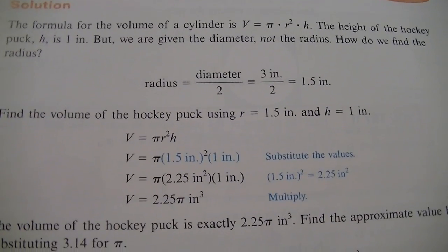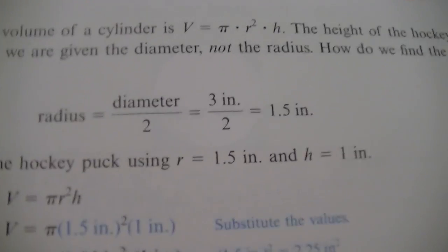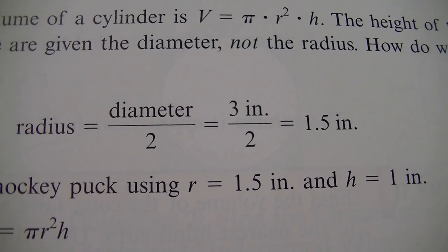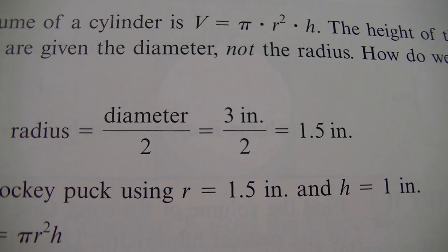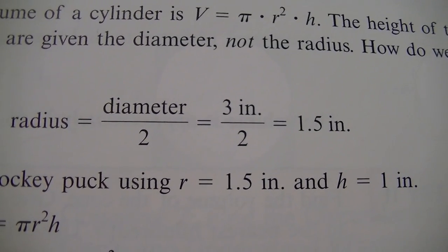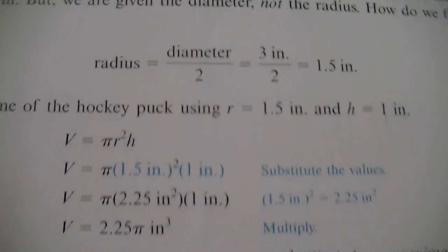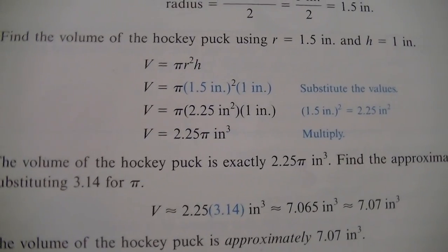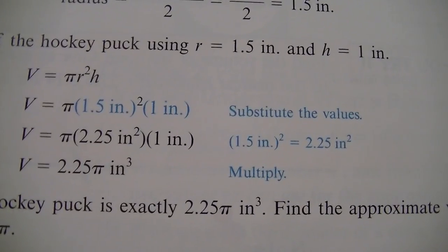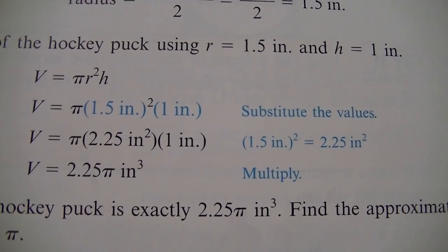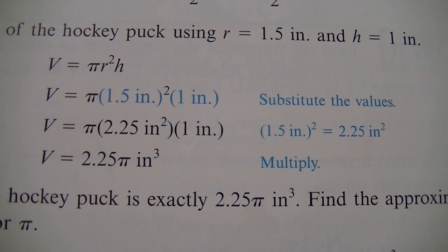All right. So they show us what I was just talking about. Radius, we had to take that diameter, cut it in half. So the three divided by two. And if you put that in your calculator, three divided sign, two, equal sign, you will get 1.5. All right. Find the volume of the hockey puck using r is 1.5 and h is one inch. Now we already know that h isn't going to change a whole lot, but let's see what happens anyways.